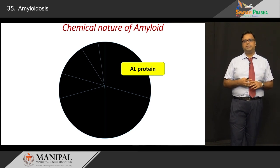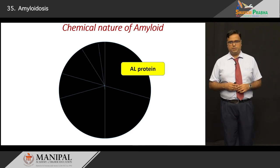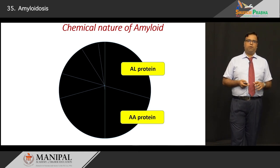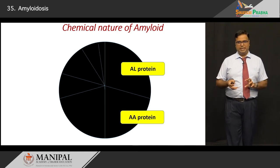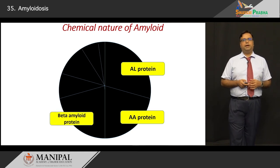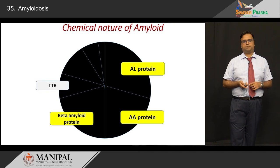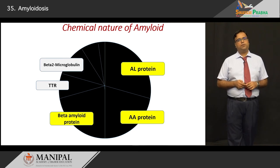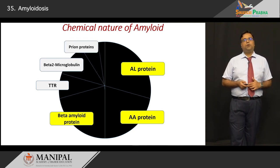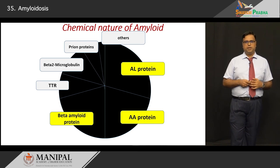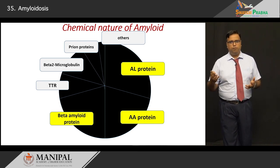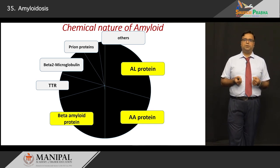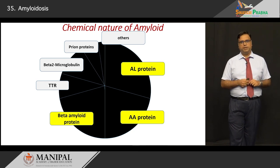There are three major biochemical proteins and four or five minor elements. The three major ones, marked in yellow, are: amyloid light-chain protein or AL protein, amyloid-associated protein or AA protein, and beta-amyloid protein. The minor ones include transthyretin (TTR), beta-2 microglobulin, prion proteins, and miscellaneous others. We will study each in detail because some diseases are specifically associated with these proteins.